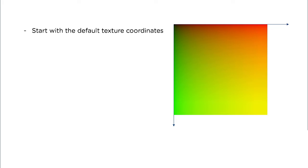We start as we normally do, with a set of default texture coordinates. We then multiply the UVs to get basic tiling, which results in a repeated texture.